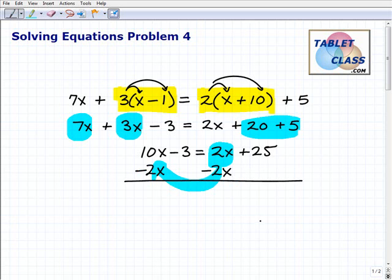Notice how I'm working. The way I set my problem up is just the way I'm showing you here. Now I'm going to be adding down. So 10x plus negative 2x is 8x minus 3. And now you can see my 2x's on the right-hand side went away. That's what I wanted. Equals 25.